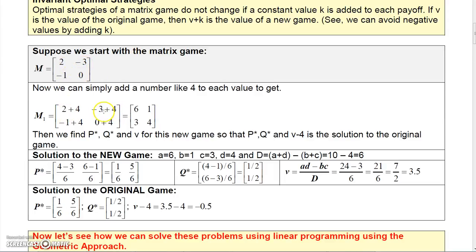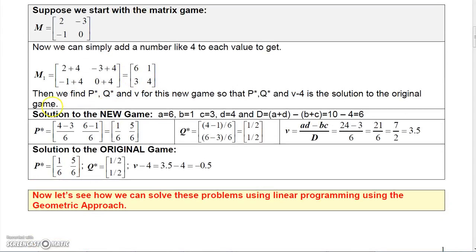We're going to add 4 so that all these values will be positive. So 2 plus 4 is 6, negative 3 plus 4 is 1, negative 1 plus 4 is 3, and 0 plus 4 is 4. Then we find P star, Q star, and V for this new game. And now V minus 4 will be the original solution.